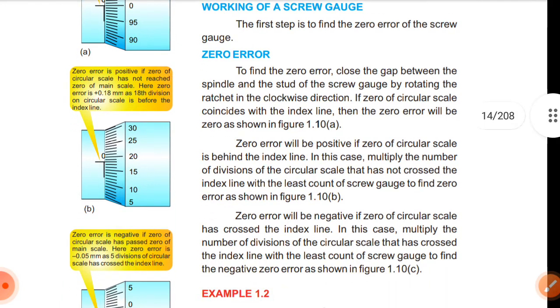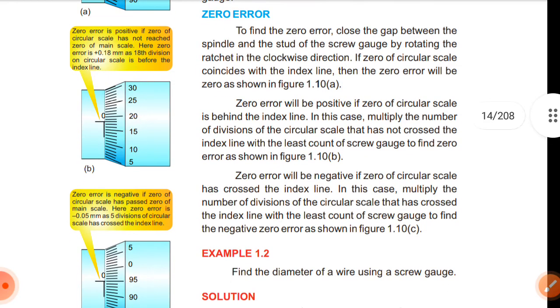Zero error will be negative if the zero of the scale has crossed the index line. In this case, multiply the number of divisions of the circular scale that has crossed the index line with the least count of the screw gauge to find the negative zero error as shown in figure 1.10c.